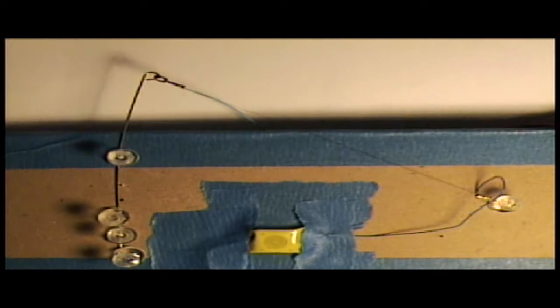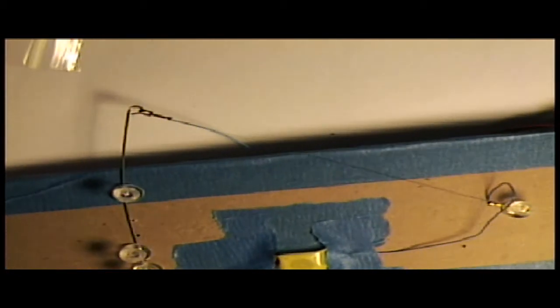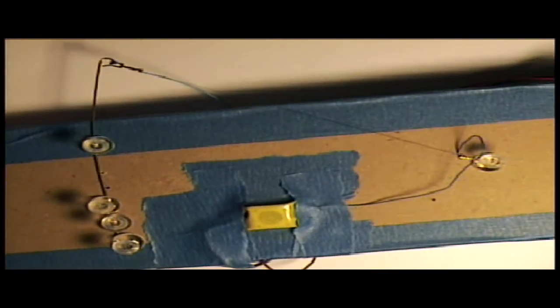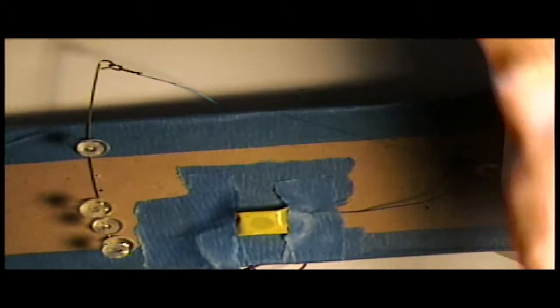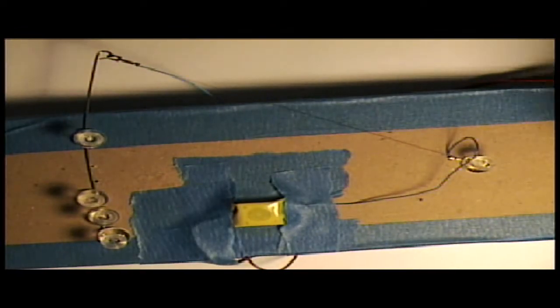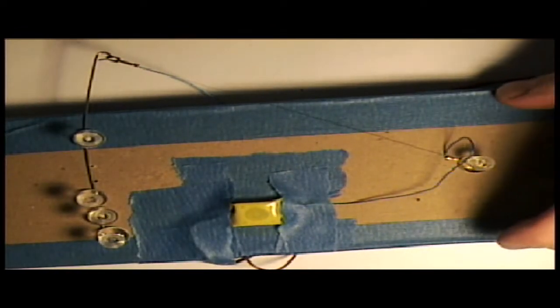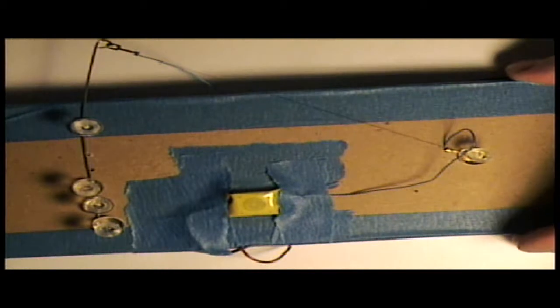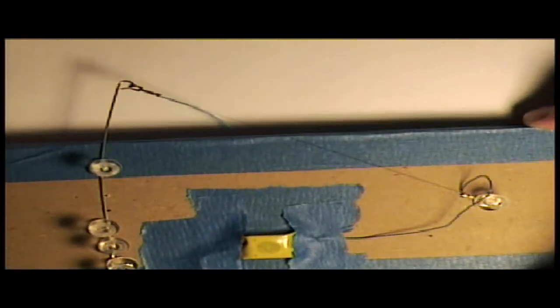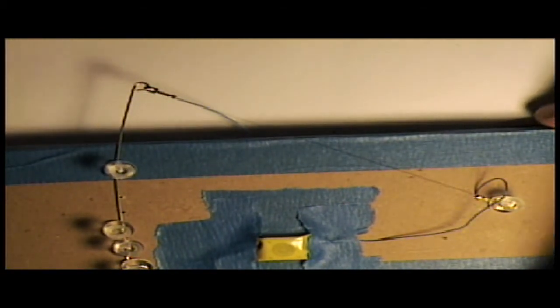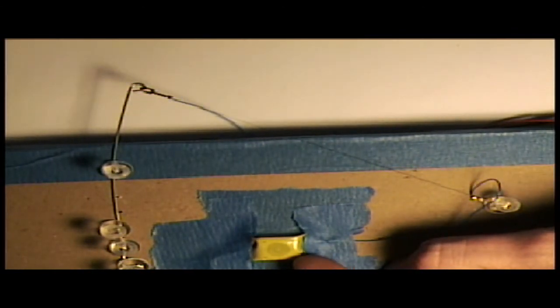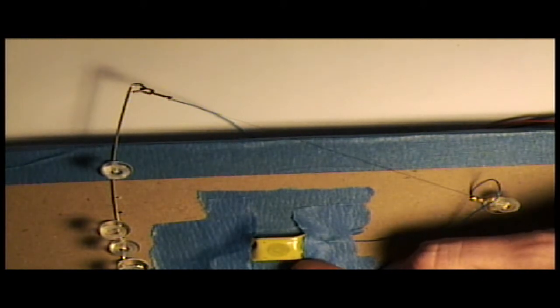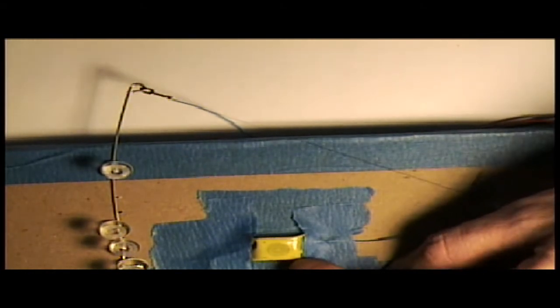This general subject is called shape memory alloys. And shape memory alloys are these metals. As the name says, they're alloys. So they're a combination of two elemental metals usually, although there can be more. And in this particular case, we're going to be demonstrating with a wire, which is often called muscle wire or flexanol. And it's commonly known as nitinol, which is a combination of titanium and nickel atoms.